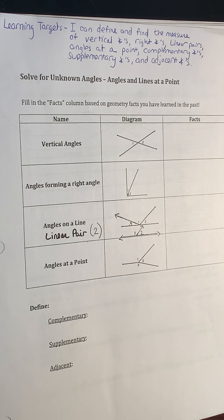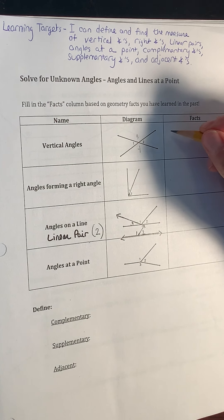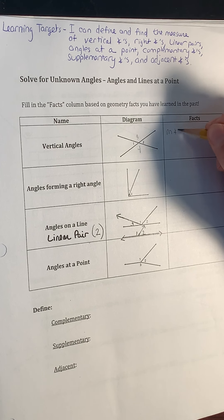Welcome to today's lesson: solving for unknown angles — angles and lines at a point. We're going to begin by talking about vertical angles. Vertical angles are formed by intersecting lines. We have two intersecting lines here, so angle one and angle two are vertical angles, and we also have another pair: three and four. Vertical angles are congruent to one another, meaning their measures are equal.